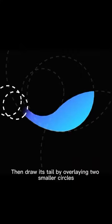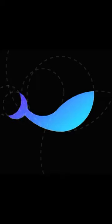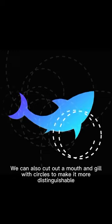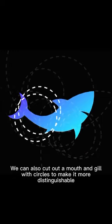Then draw its tail by overlaying two smaller circles. Draw its fins with similar methods. We can also cut out a mouth and gill with circles to make it more distinguishable.